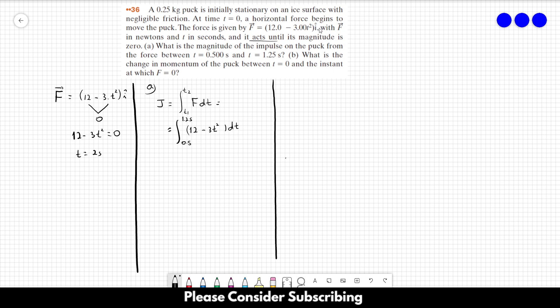I'm not mentioning the i hat because letter a wants the magnitude, so let's not write the unit vector. We have to solve this equation. This is going to be 12t minus 3t to the power of 3 over 3, which should be evaluated between 0.5 and 1.25.